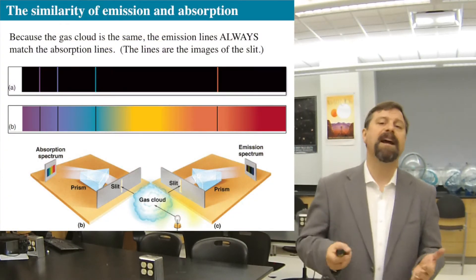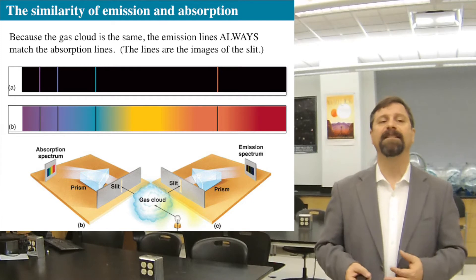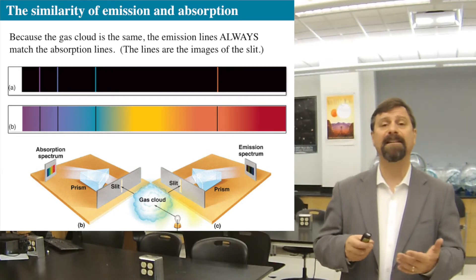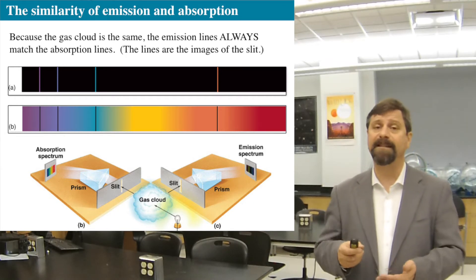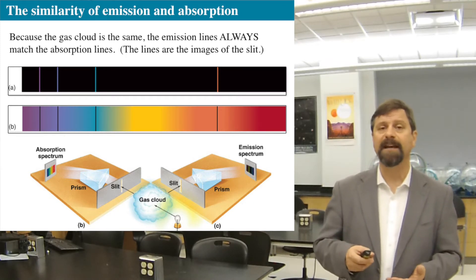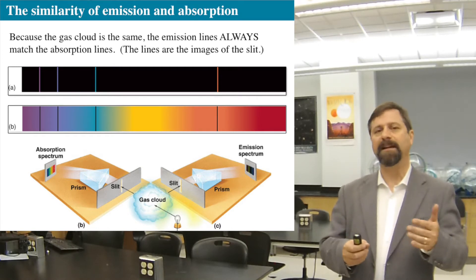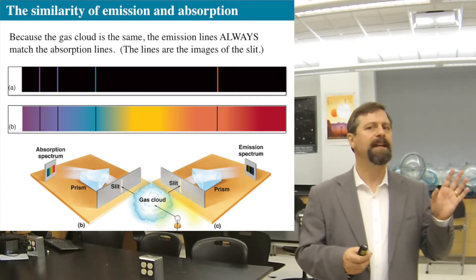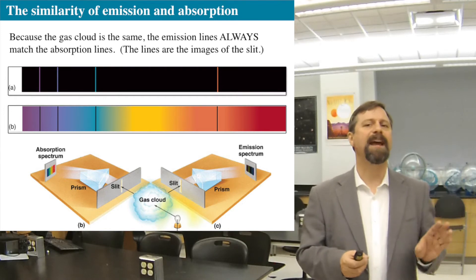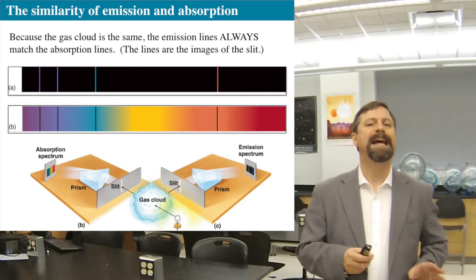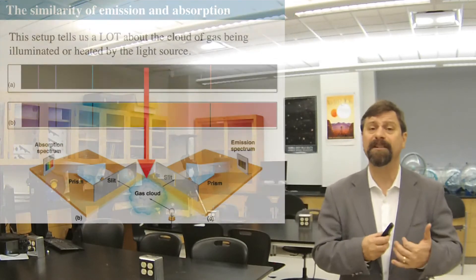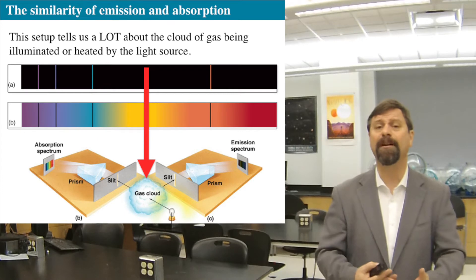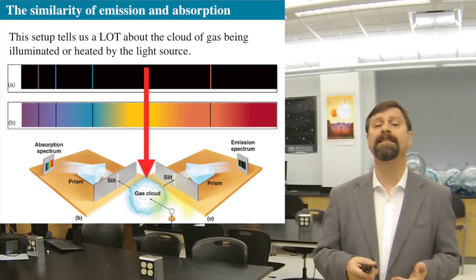This means the emission lines and absorption lines are at exactly the same wavelengths — hydrogen will absorb and emit at exactly the same wavelengths. It doesn't absorb at one wavelength and emit at another; it emits at the same exact wavelength that it absorbs. That tells you something about the nature of matter itself.